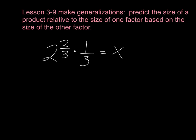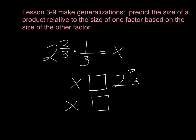Let's look at another example: a mixed number times a fraction. We have two and two-thirds times one-third. I'd like you to make the prediction: is x greater than or less than two and two-thirds, and is x greater than or less than one-third? Pause the video, make your predictions, come back, and see if you were correct.